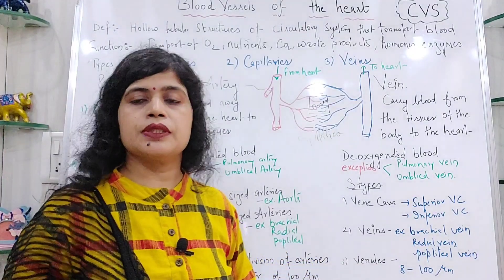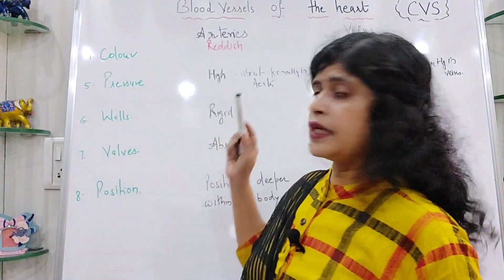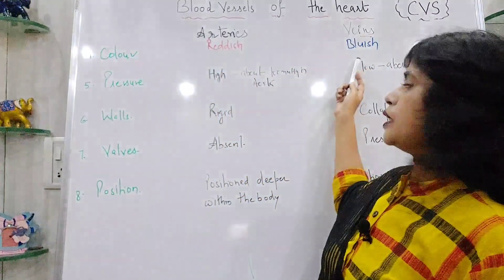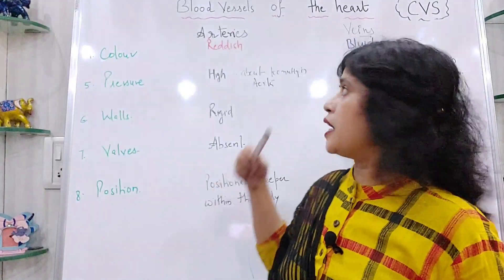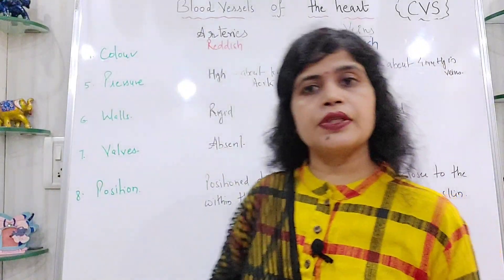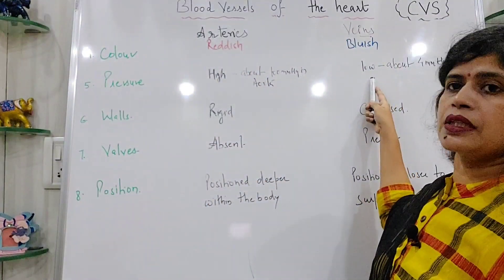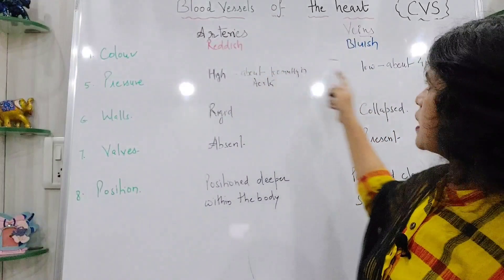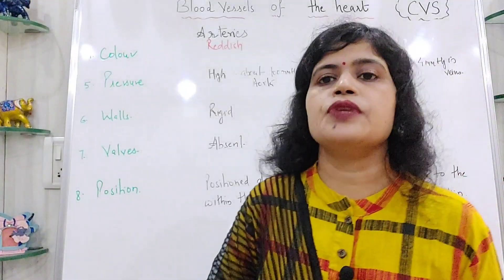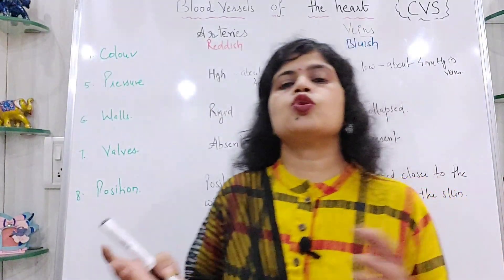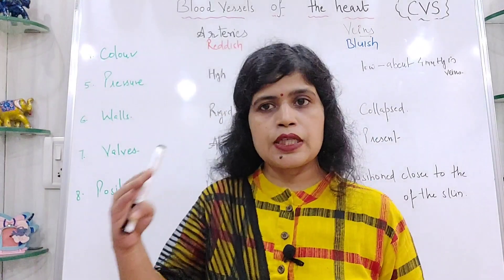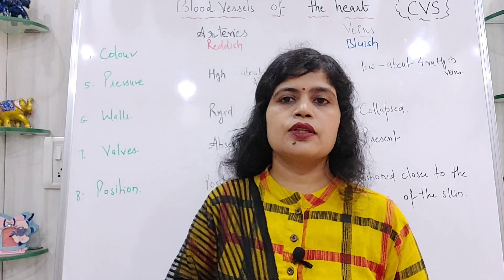Regarding color, arteries have a reddish color and veins have a bluish color. In terms of pressure, arteries have a high amount of pressure — about 100 mmHg in the aorta — whereas veins have much lower pressure, about 4 mmHg. This large pressure difference is what drives blood from the left side of the heart to the right side, maintaining circulation.